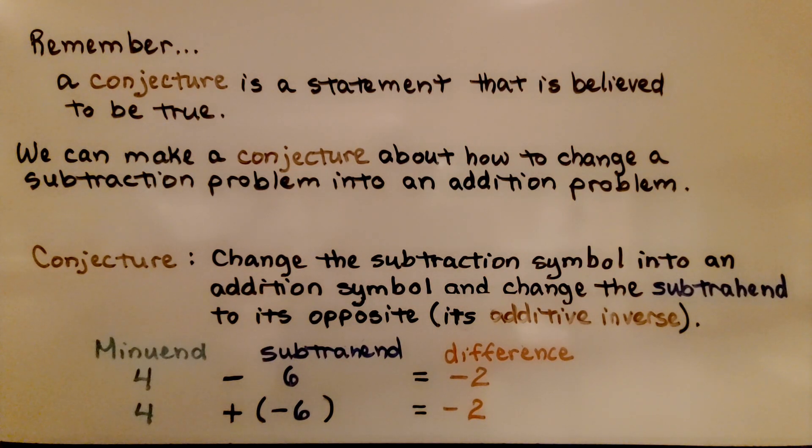Remember, a conjecture is a statement that is believed to be true. We can make a conjecture about how to change a subtraction problem into an addition problem. Here's our conjecture. We change the subtraction symbol into an addition symbol and change the subtrahend to its opposite, its additive inverse.